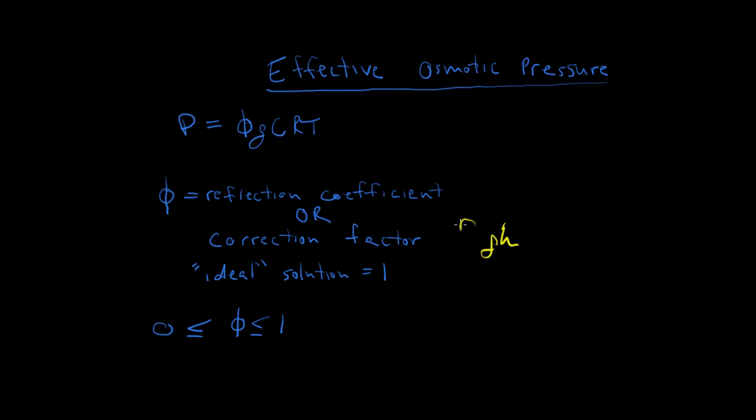Glucose has a reflection coefficient of 1 because it's 100% reflected off the membrane. Urea has a reflection coefficient of 0 because it freely permeates the membrane. The reflection coefficient is between 0 and 1 for 0% and 100% reflection. Placing this in front of our equation gives us the effective osmotic pressure.